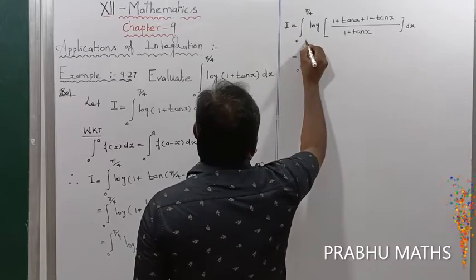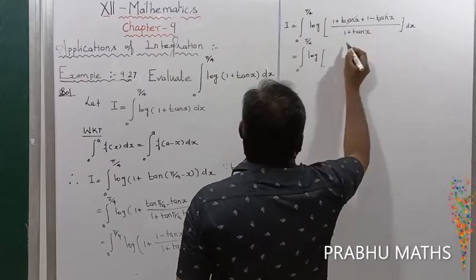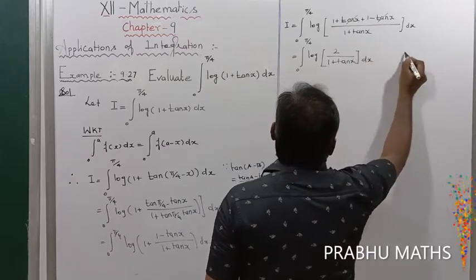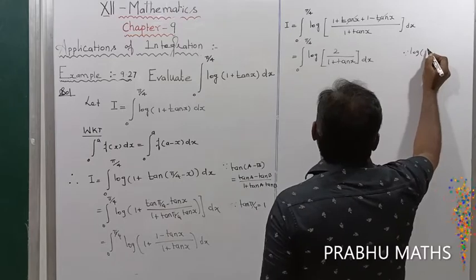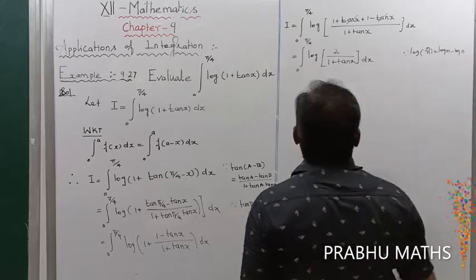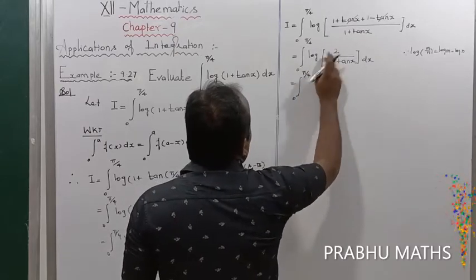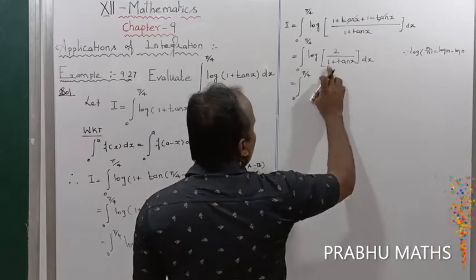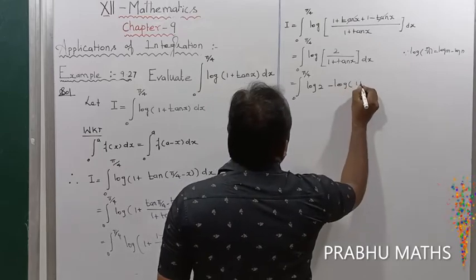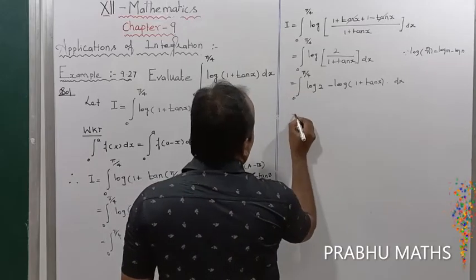So I equals integral from 0 to π/4 of log(2 / (1 + tan x)) dx, since tan x cancels in the numerator leaving 2. By using the log property log(M/N) = log M − log N, this becomes integral from 0 to π/4 of [log 2 − log(1 + tan x)] dx.